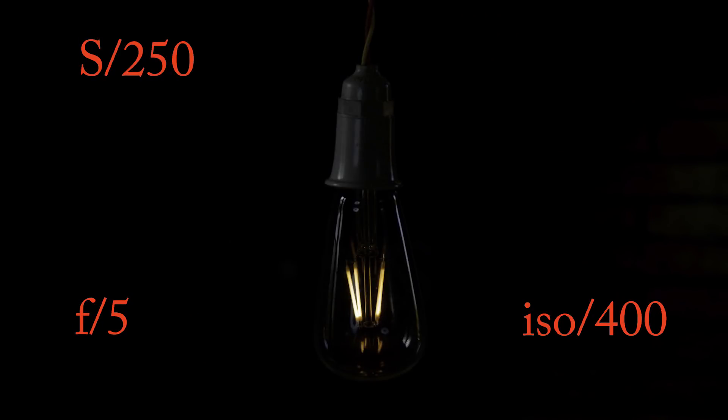The shutter speed has to be 250. We are now in the dark. I am now in the 400. You can see the shutter speed on the camera and see the dark light. The shutter speed is controlled by light.